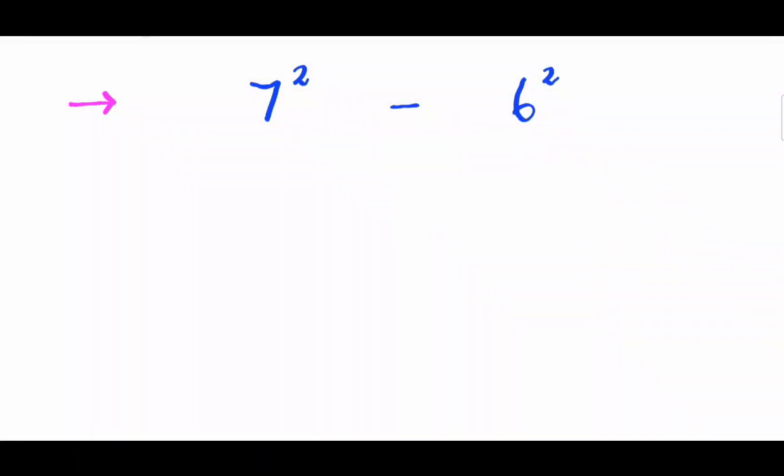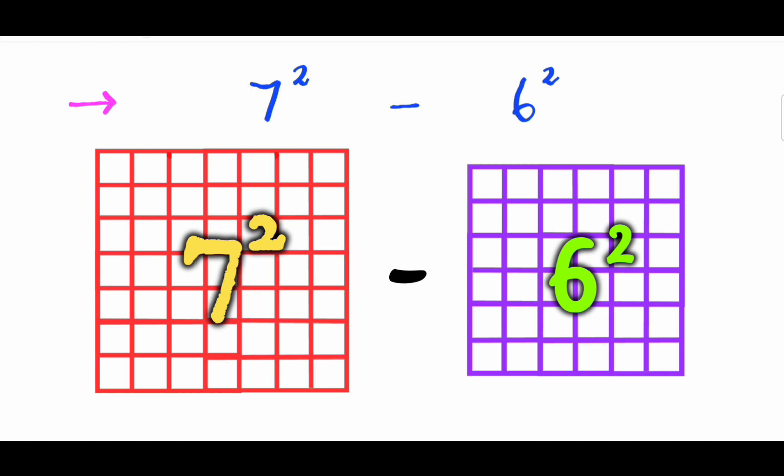Let's start with the question, what is 7 square minus 6 square? By the way, there is a faster way to solve 7 square minus 6 square than calculating the two squares and then subtracting.